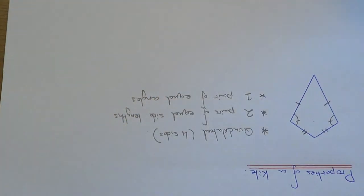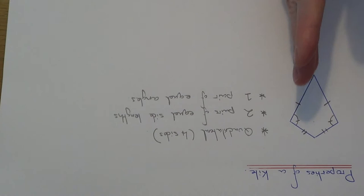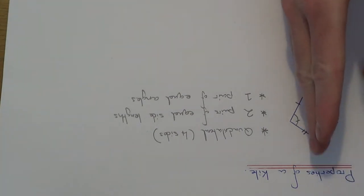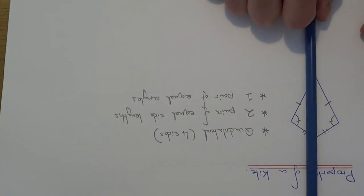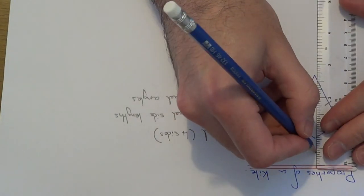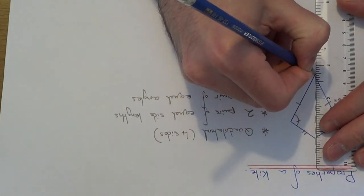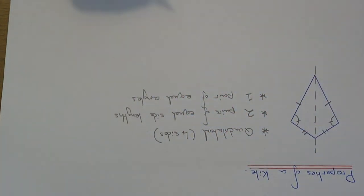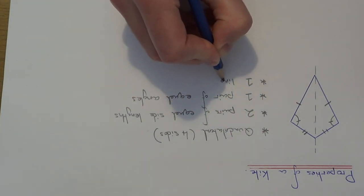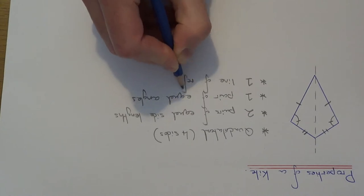Let's look at the lines of reflectional symmetry on the kite. You should be able to see that the line of symmetry on a kite is down the middle. So it's here. Let's draw that line of symmetry in. It's only got one line of reflectional symmetry.